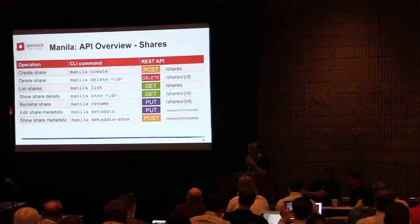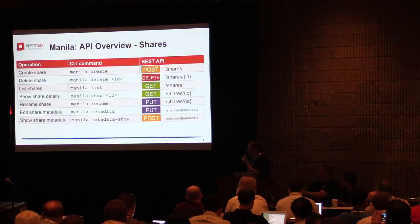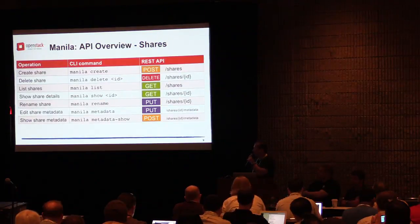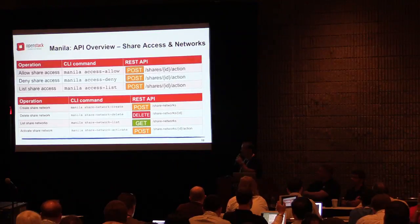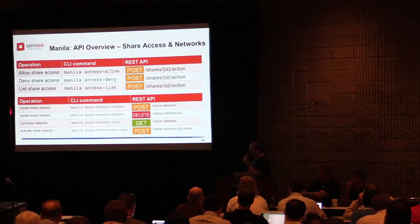Let's go quickly through the basic CRUD operations — no surprises there. With shares, you can create, delete, and list them. You can show share details, rename shares, and as any OpenStack object, shares have metadata which you can view and edit. On the access and network side, you can allow share access, deny share access — based either on IP information right now or eventually on the identity of the user — and you can list the accesses. On the networks, a share is associated with a network. Creating a share network means simply associating a share with a specific existing Neutron network.